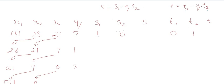Let us calculate S for the first iteration, which is equal to 1 minus 5 times 0, which is equal to 1. The value of T for the first iteration will be 0 minus 5 times 1, which is equal to minus 5. We will make a shift now.